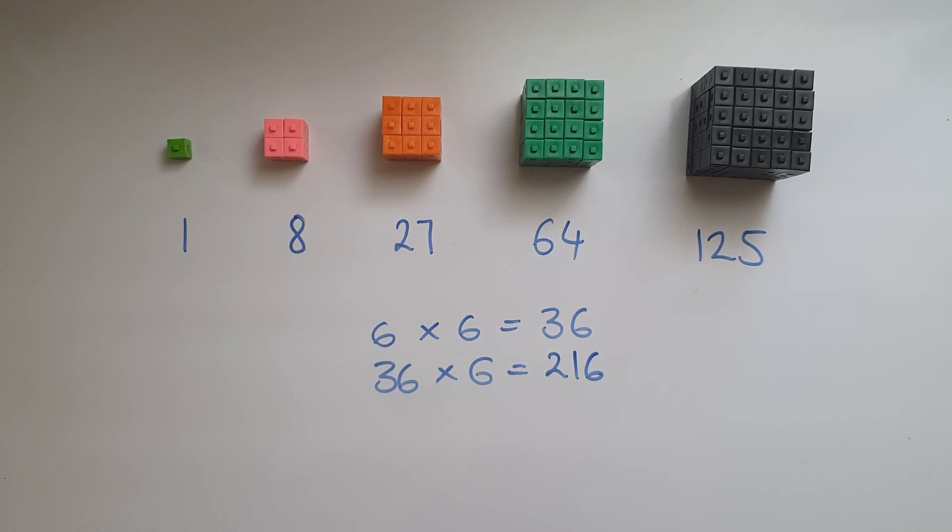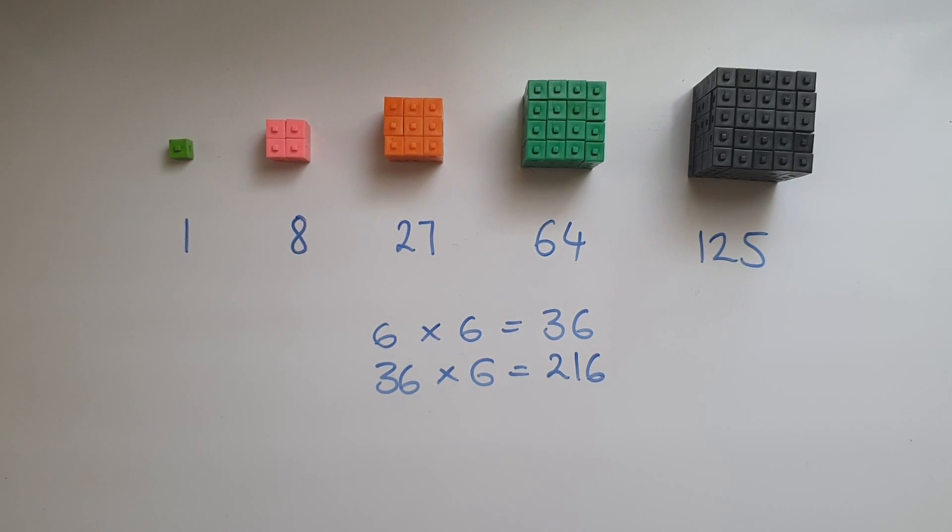With 7, you can do 7 times 7 times 7, which is 343, and so on.